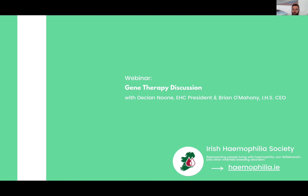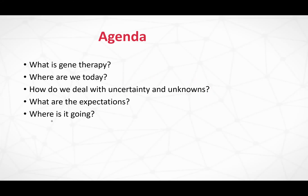So I'll go through where we are now in terms of gene therapy — a quick overview of the agenda. What is gene therapy, where we are today, how to deal with the uncertainties, what were the main uncertainties — which is slightly different to the way Brian will approach it. What are the expectations I will leave up to Brian, and where is it going?